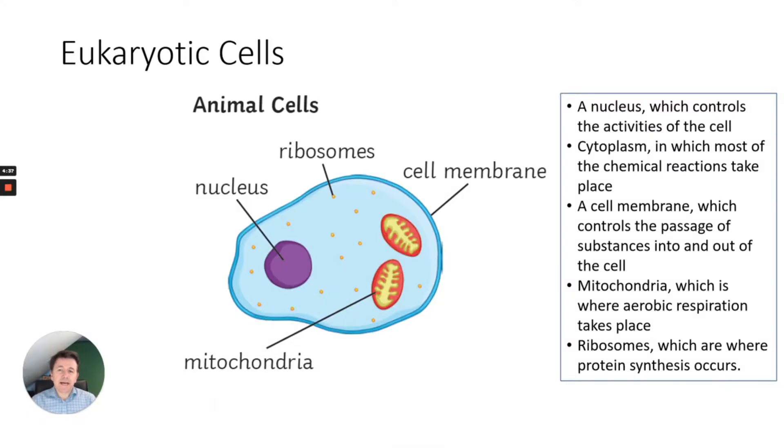Okay, so let's first look at eukaryotic cells. Eukaryotic cells include animal and plant cells. You'll need to know the structures of an animal cell. As you can see here, we have a nucleus which controls the activities of the cell, the cytoplasm in which most of the chemical reactions take place, and a cell membrane which controls the passage of substances into and out of the cell.